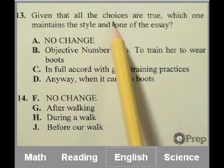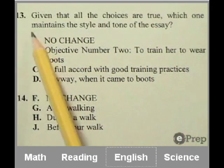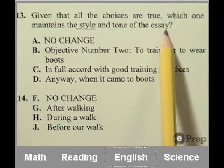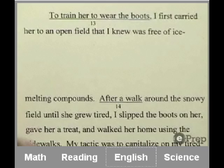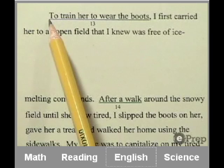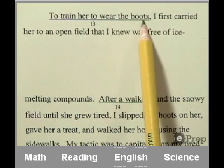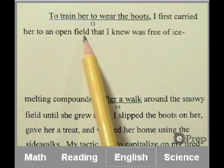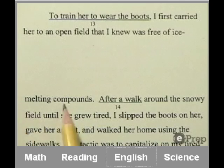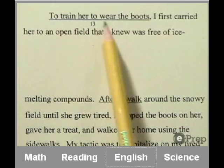Given that all of the choices are true, which one maintains the style and tone of the essay? So let's quickly take a look at the text. And it says right here, to train her to wear the boots, I first carried her to an open field that I knew was free of ice-melting compounds. So we're going to focus in on this phrase.